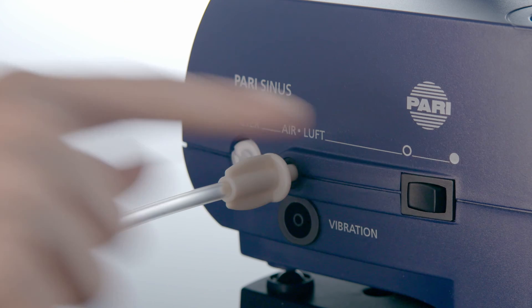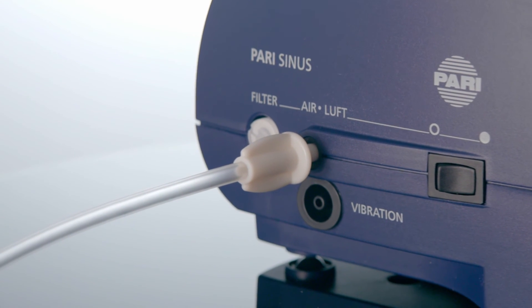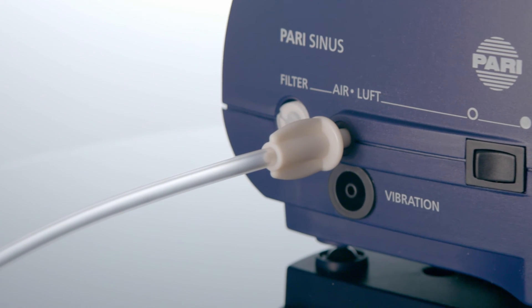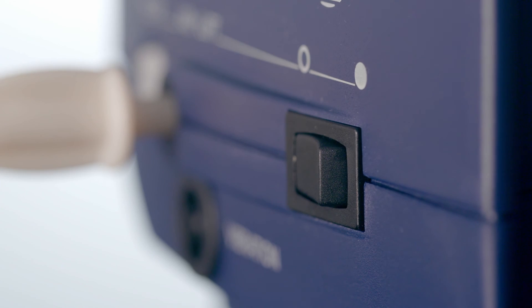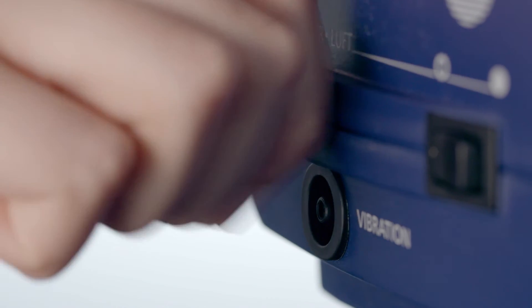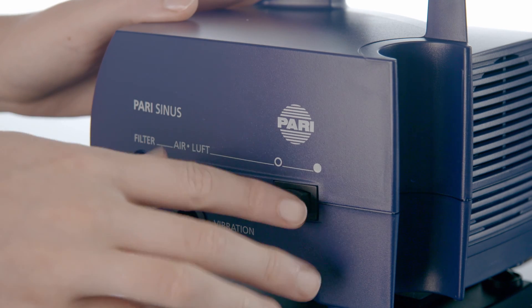To dry the tubes, insert the appropriate end of one tube into the air socket. Switch the device on and let it run until the tube is completely dry. Switch the device off. Now insert the appropriate end of the other tube into the air socket, and once again switch the device on and let it run until this tube is completely dry.